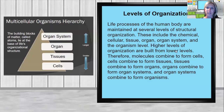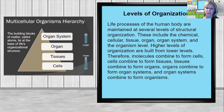The levels of organization: life processes of the human body are maintained at several levels of structural organization. These include the chemical, cellular, tissue, organ, organ system, and organism level. Higher levels of organization are built from lower levels. Therefore, molecules combine to form cells, cells combine to form tissues, tissues combine to form organs, organs combine to form organ systems, and organ systems combine to form the organism.